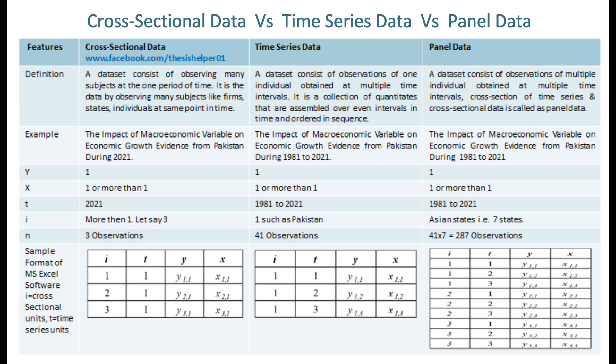An example of cross-sectional data is: the impact of macroeconomic variables on economic growth, evidence from Pakistan during 2021. An example of time series data is: the impact of macroeconomic variables on economic growth, evidence from Pakistan during 1981 to 2021. An example of panel data is: the impact of macroeconomic variables on economic growth, evidence from Pakistan during 1981 to 2021.